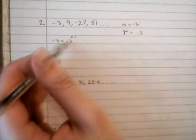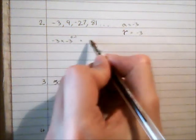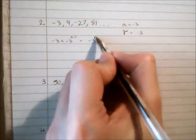And because these are both negative 3, we can use index laws to simplify that to negative 3 to the power of n.